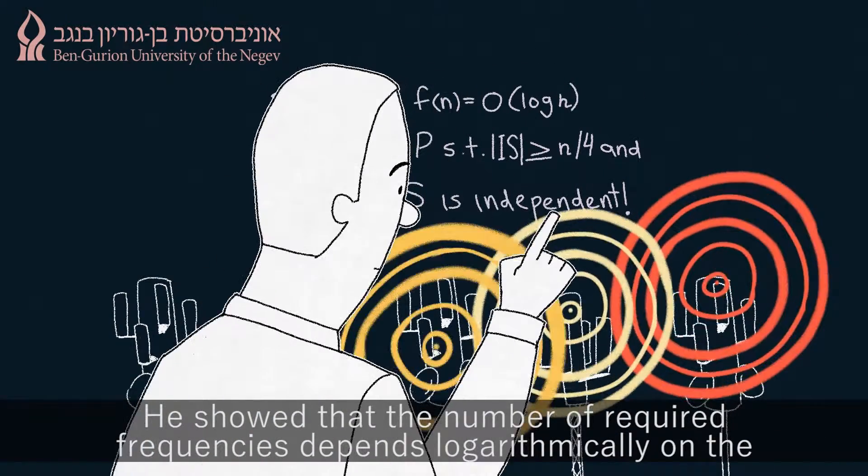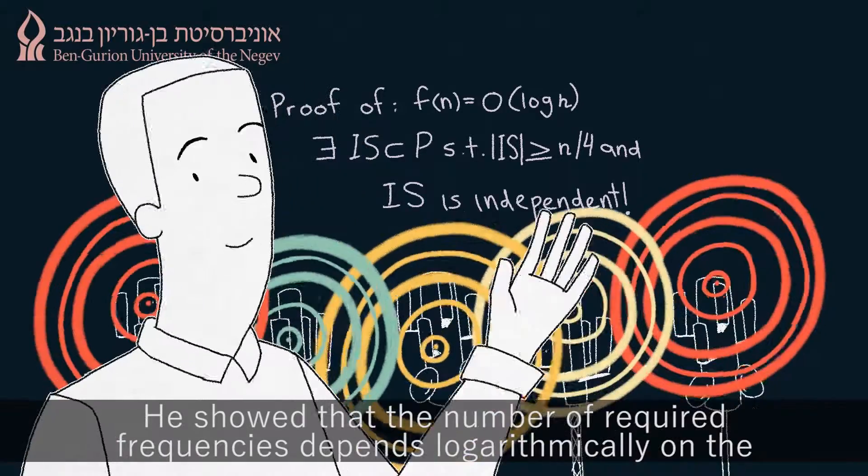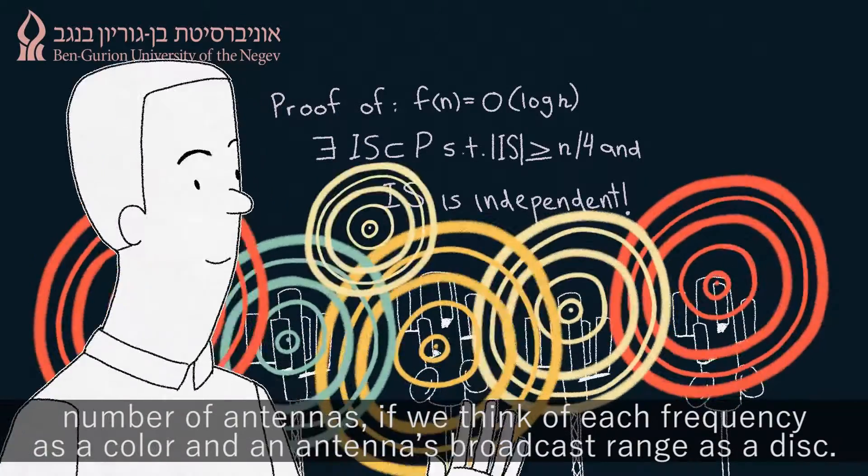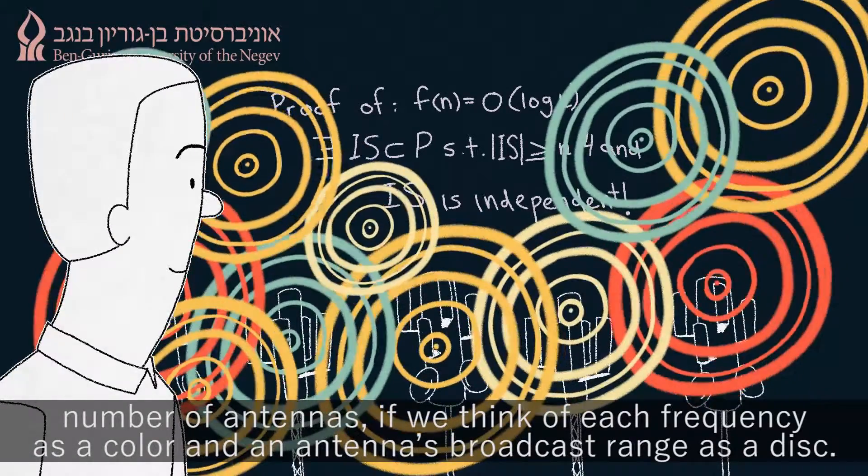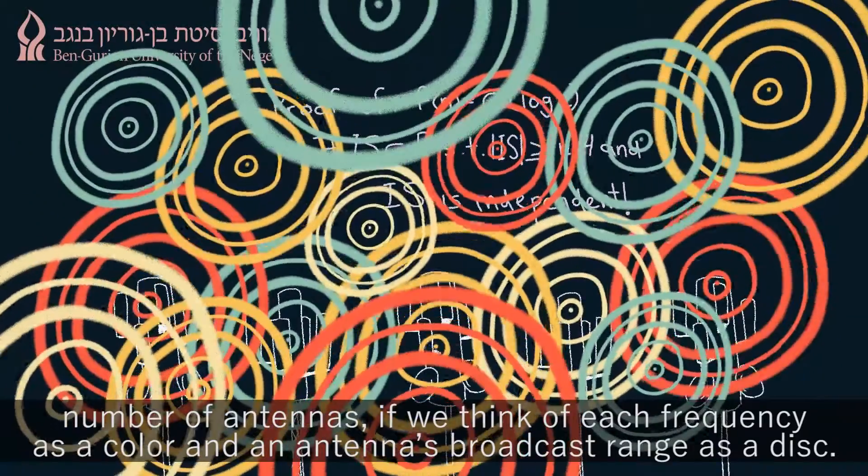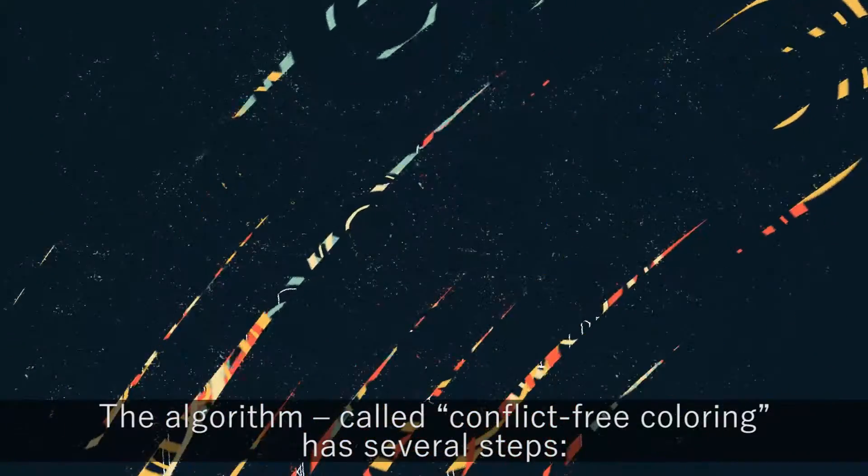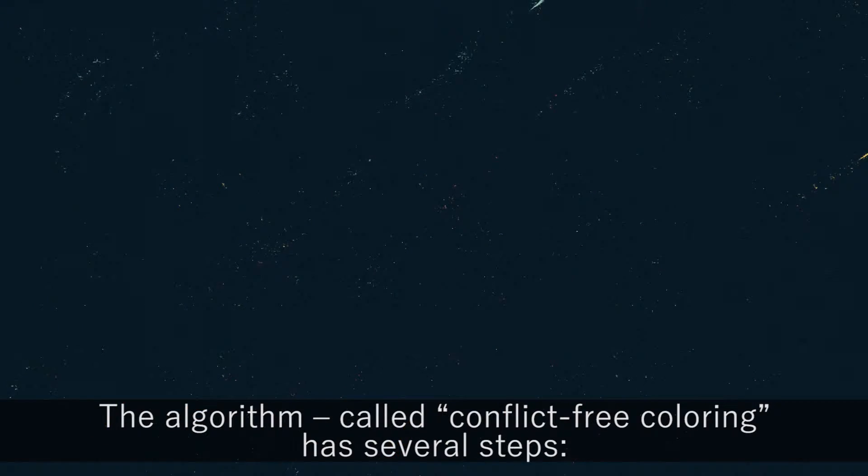He showed that the number of required frequencies depends logarithmically on the number of antennas, if we think of each frequency as a color and an antenna's broadcast range as a disk. The algorithm, called conflict-free coloring, has several steps.